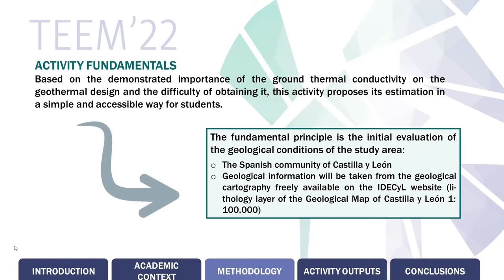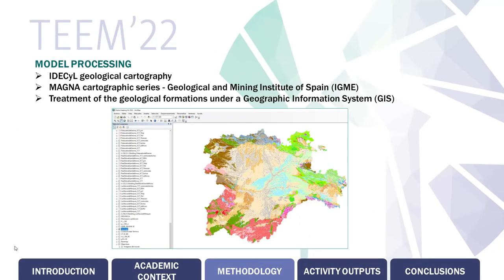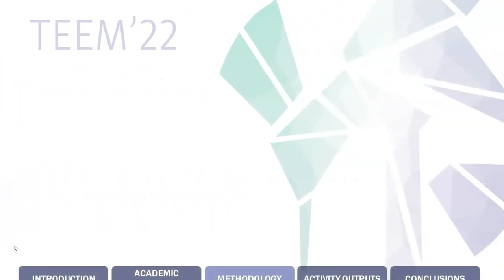Based on the importance of the ground thermal conductivity in geothermal design and the difficulty of its obtention, this activity proposes estimation in a simple and accessible way for students. The fundamental principle is the initial evaluation of the study area. In this case, we will be focused on the Spanish community of Castilla and León, for which we will consult the geological information of the IGME website. With this information, contrasted by the Magna Cartographic series, we will treat the geological formation under a geographic information system. Then we will process all the geological data and assign an estimated value of thermal conductivity through official databases and laboratory measurements. Finally, we will have the thermal conductivity map of the area.